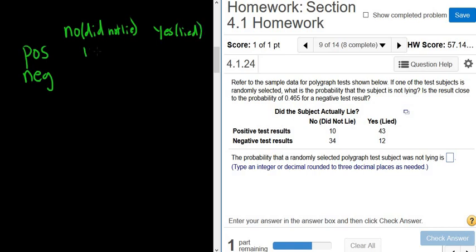We have some numbers: 10, 34, 43, and 12. So how do you read these tables? Well, basically there are 10 people that are positive and did not lie.